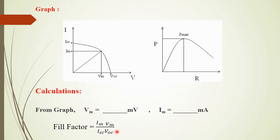Then we will plot one more graph: resistance versus power. From that graph, you will find out at what resistance the power delivered by the solar cell is maximum, which we can use for certain applications.